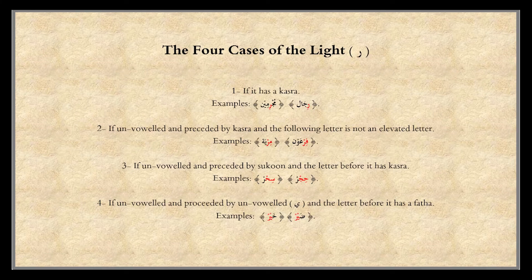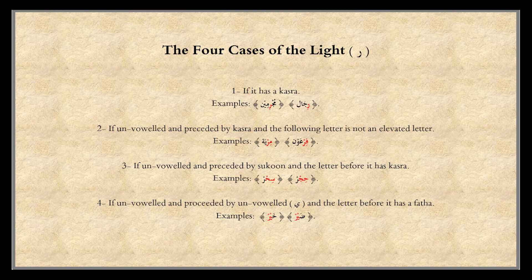Now the four cases of the light Ra. There are two conditions for the Ra to be pronounced light: one, if followed by a lowered letter; two, if the letter before it has an original Kasra. These conditions make the Ra light in four cases: one, if with a Kasra — like Rijal, Mujerimin. Two, if unvoweled and preceded by Kasra, and the following letter is not an elevated letter — like Mir-Yah, Fir'aun. Three, if unvoweled and preceded by Sukun, and the letter before it has a Kasra — like Hijr, Sihr. Four, if unvoweled and preceded by unvoweled Ya — like Khayr, Bayr.